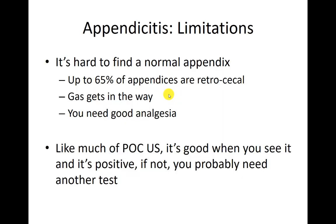Limitations include that it's definitely hard to find the appendix at times because normal appendices can be retrocecal, and gas makes bowel ultrasound so frustrating. Good analgesia is important — especially with pediatric patients, use warm gel and make sure they're in a comfortable position, since you're going to be touching them where it hurts. If you see the appendix on ultrasound, you're good. If you don't see it, then you need to think about other tests.